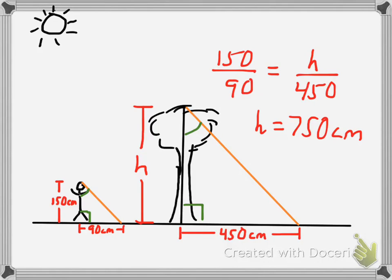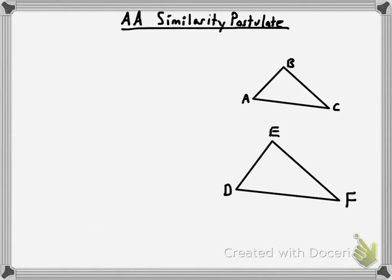The more important takeaway for this lesson is that if two angles of one triangle are congruent to two angles of another triangle, then the triangles are similar — and that's called the Angle-Angle similarity postulate. The third angles must also be congruent if the first two pairs are. And with triangles specifically, once all corresponding angles are congruent, the sides are automatically proportional. That doesn't work for quadrilaterals or polygons with more sides, but it does for triangles.